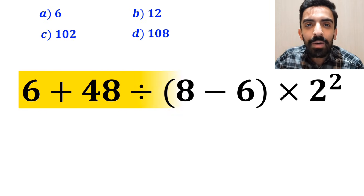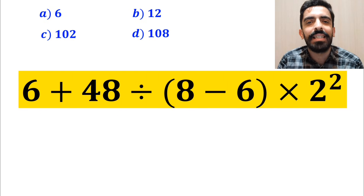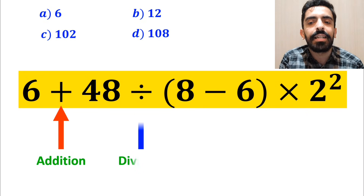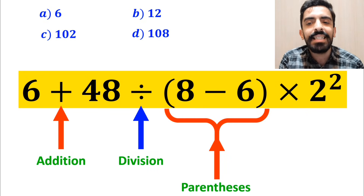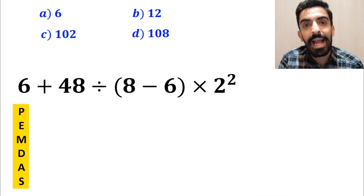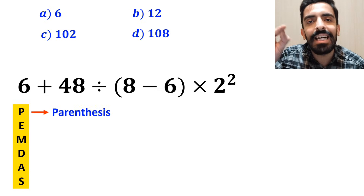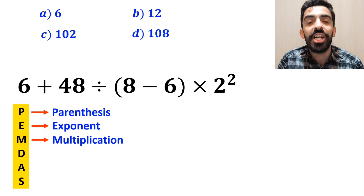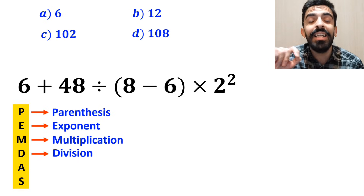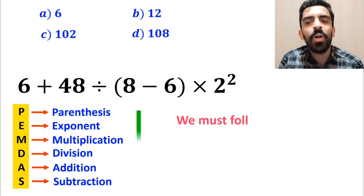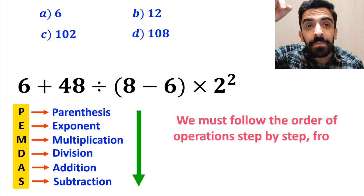Now let me show you how to solve this expression properly. As you can see in the image, this expression has an addition sign, then a division sign, followed by parenthesis, then a multiplication, and finally an exponent. To solve this problem we must follow the PEMDAS rule: P stands for parenthesis, E stands for exponent, M stands for multiplication, D stands for division, A stands for addition, and S stands for subtraction. We must follow the order of operations step by step from top to bottom.